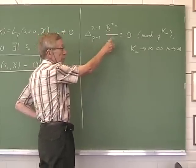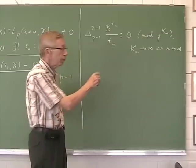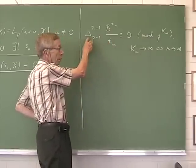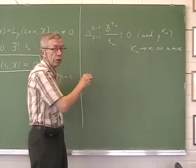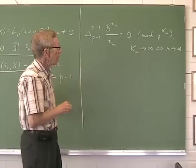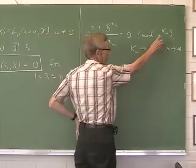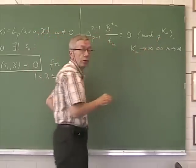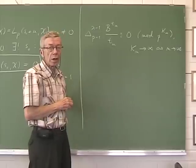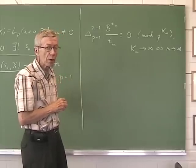Here, tn is a special sequence of indices and delta acts on this sequence. And here the exponent kn tends to infinity according to Kummer-ton.